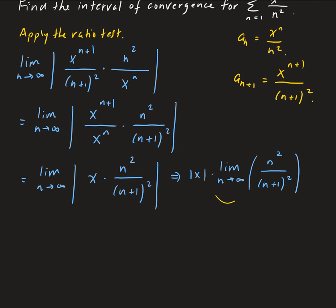The limit of n squared over n plus 1 squared — expanding the denominator gives us n squared plus 2n plus 1. If we think of this as a function of x, we have x squared over x squared plus 2x plus 1, which is a rational function. Taking the limit as x goes to infinity, this goes to 1.